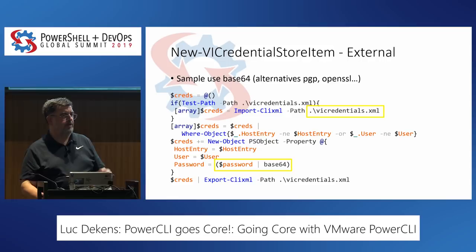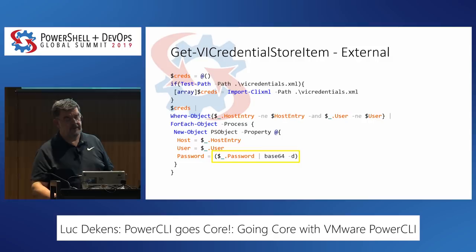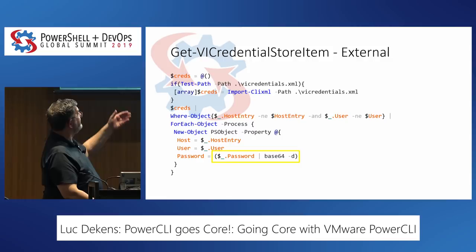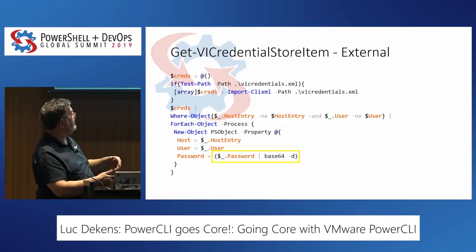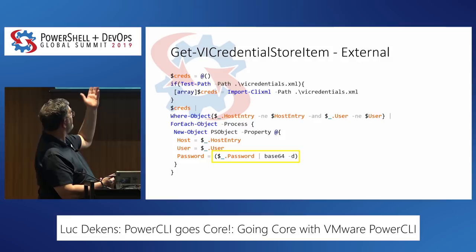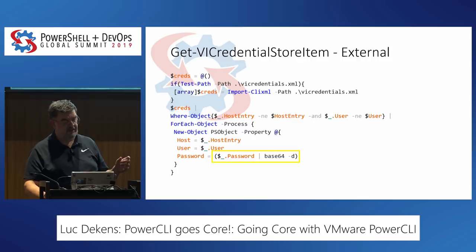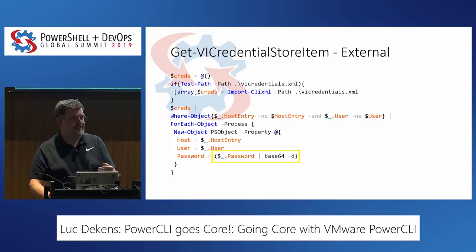When you want to extract it, the Get cmdlet calls base64 with the -d (decode) flag. That way you get back the same information — host, user, and password — that you're used to getting from Get-VICredentialStoreItem. The original also returns a 'file' property, which I didn't add here since I didn't see the value in it, but it could be done.